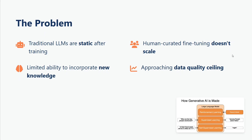First, let's understand why the paper is very important. Traditional LLMs are static after training. Once you have pre-trained or fine-tuned a model, adding new context is a big pain — you need to fine-tune it again. This is cumbersome, and for fine-tuning you need to generate a human-curated dataset, which is just not scalable. Every day new data comes out, and you can't update your LLM regularly when humans are in the loop.